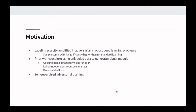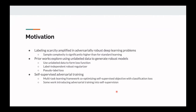In this paper, we're interested in self-supervised adversarial training, which is a different technique the authors introduce. This is a multitask learning framework co-optimizing a self-supervised objective with a classification loss. Some prior work has been introducing adversarial training into self-supervision, but these can probably be improved with contrastive learning — that's really the main takeaway and the direction this paper moves in.